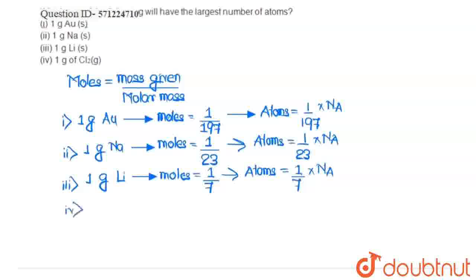And in the fourth option, we are given 1 gram of chlorine. If we calculate the moles of chlorine, the molar mass of Cl2 molecule is 71. The atomic mass of chlorine atom is 35.5.